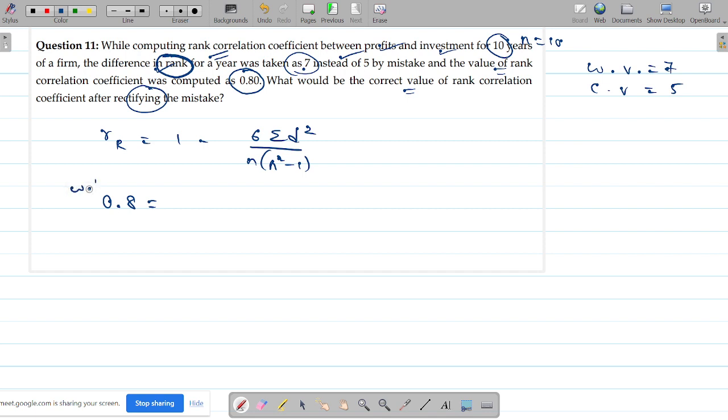This is the wrong RR. This is the wrong correlation coefficient, because 1 minus 6 times of this wrong summation d squared was taken. In the wrong summation d squared it is wrong, and n is 10. So n into n squared minus 1 can be taken directly. We have to correct it.